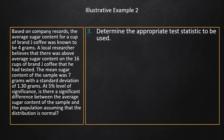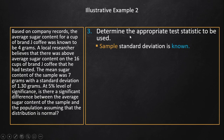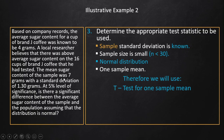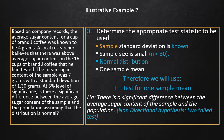The sample standard deviation is known at 1.30, sample size is 16 which is less than 30, and we have a normal distribution with one sample mean of 7 grams — therefore we use the t-test for one sample mean. The alternative hypothesis is non-directional, so we use a two-tailed test.